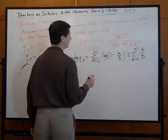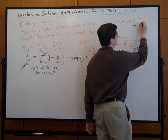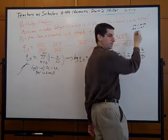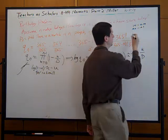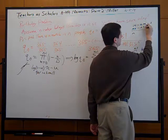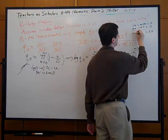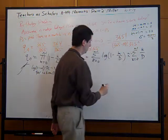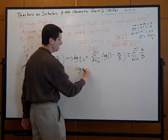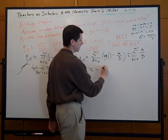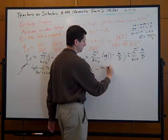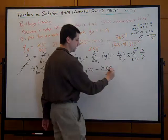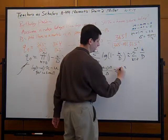Using the classic trick of writing the sum forwards and backwards, 2s = m(m+1), so the sum equals m(m+1)/2. Therefore log(qn) ≈ -(n-1)n/D, and being a little lazy, this is approximately -n²/D.